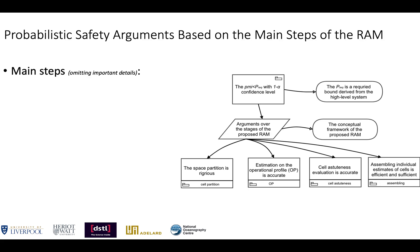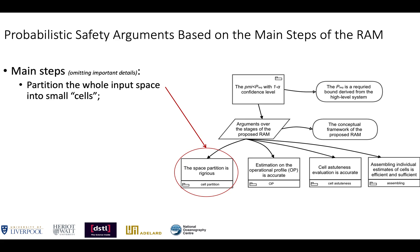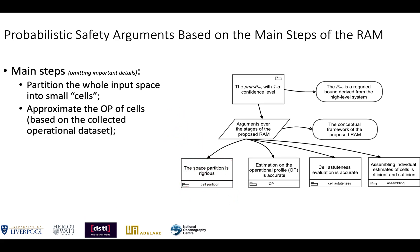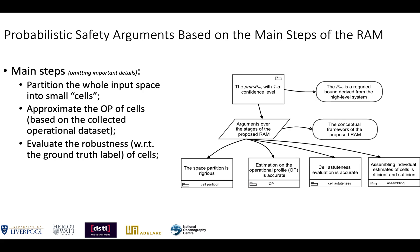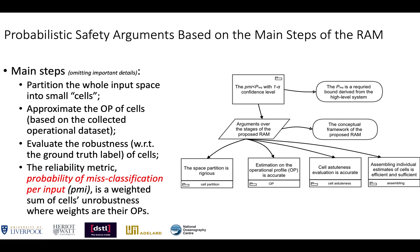Omitting important modeling details, our reliability assessment model essentially consists of four main steps, based on which we develop the probabilistic safety arguments. In step 3, we estimate the robustness to the ground truth label of each cell, and we need to collect evidence to support the claim that those robustness estimates are accurate. Finally, the reliability metric of our interest — the probability of misclassification per input (PMI) — can be rewritten as a weighted sum of cell unrobustness, where the weights are the operational profiles of cells. For this assembling step, we need to argue it is efficient and effective in terms of minimizing the compound reliability assessment errors propagated from individual estimates at the cell-wise level.